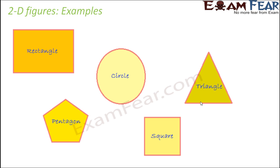That doesn't mean you cannot draw three-dimensional figures on paper — you can, but you need a special technique to do so. To test whether an object is two-dimensional or three-dimensional, place it on a sheet of paper. For example, take a ball and place it on a sheet of paper. Does the ball lie flat along the sheet, or does it stand out from the sheet? Of course it stands out, which proves that the ball is a three-dimensional figure.